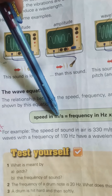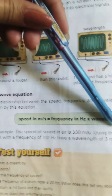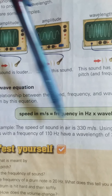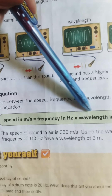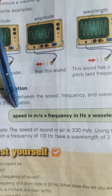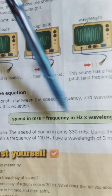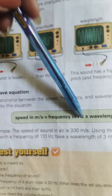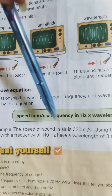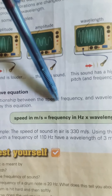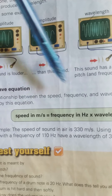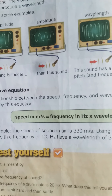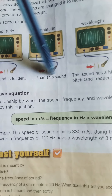If we know any two values in this equation, we can find the third. If we know frequency and wavelength, we can find the speed of sound. If we know the wavelength and speed, we can find the frequency of the sound.